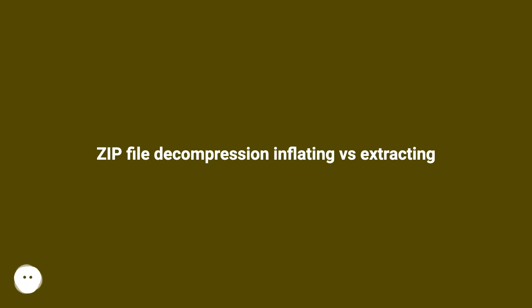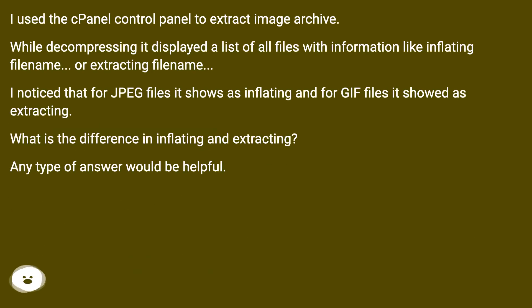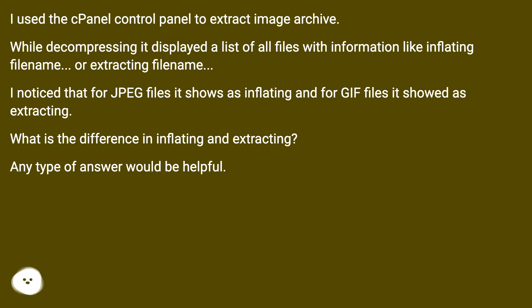ZIP file decompression: inflating versus extracting. I used the control panel to extract an image archive, and while decompressing it displayed a list of all files with information like 'inflating: filename' or 'extracting: filename'. I noticed that for JPEG files it shows as inflating, and for GIF files it showed as extracting. What is the difference between inflating and extracting?